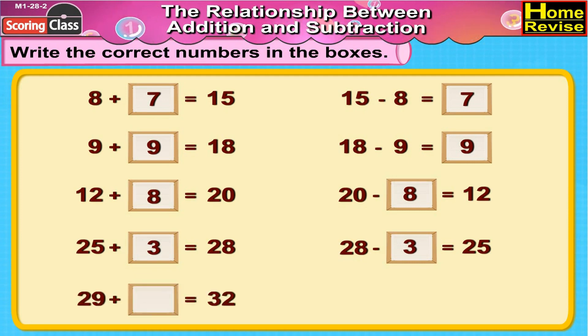Now the last one is 29 plus dash is equal to 32. 29 plus how many is equal to 32? 3 it is. 29 plus 3 is equal to 32.